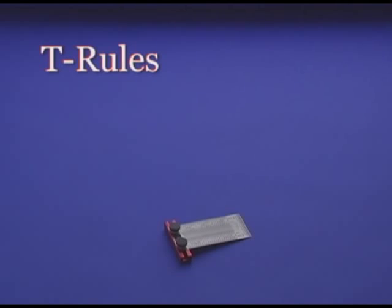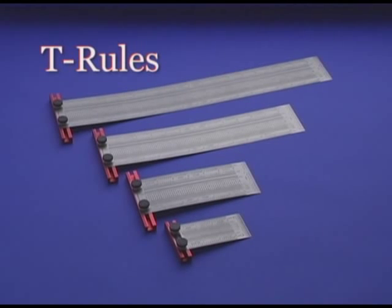INCRA T rules are offered in 3, 6, 12 and 18 inch lengths. Metric versions are also available.